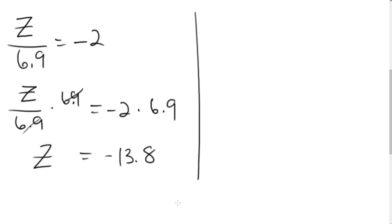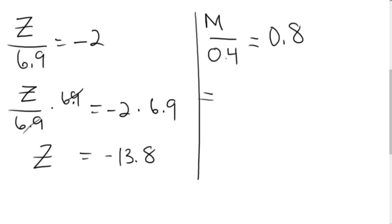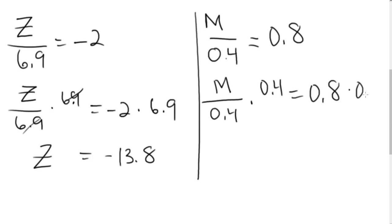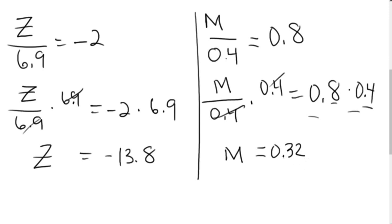You try the following example: M over 0.4 equals 0.8. Pause the video. If you said you're going to do the opposite — multiply by 0.4 on both sides — these cancel, leaving M. I have the same signs here, so I know the answer is positive. 0.4 times 0.8: I know it's 32, so with two digits behind the decimal that's 0.32. So M equals 0.32.